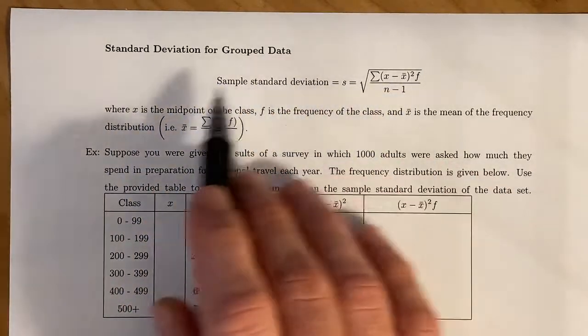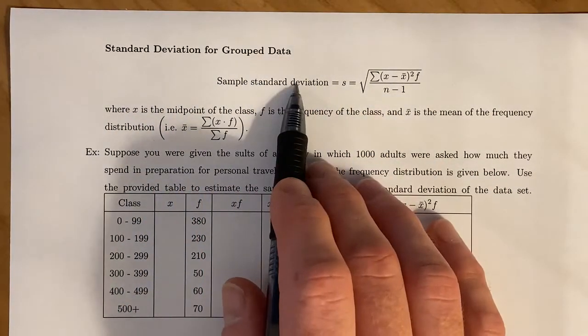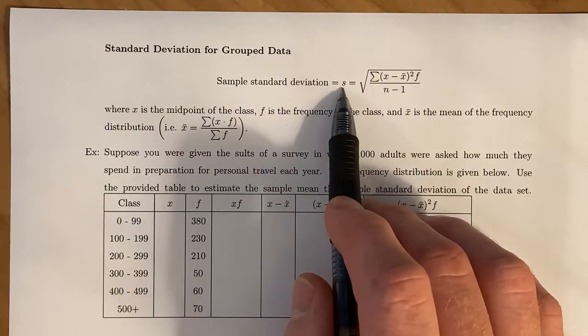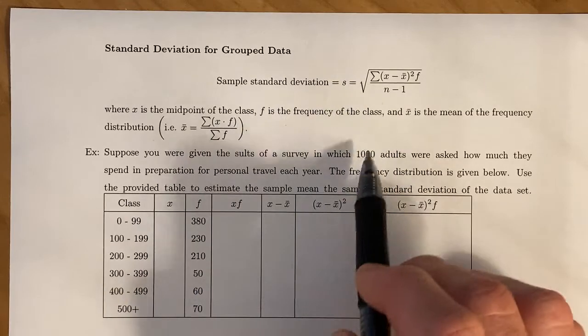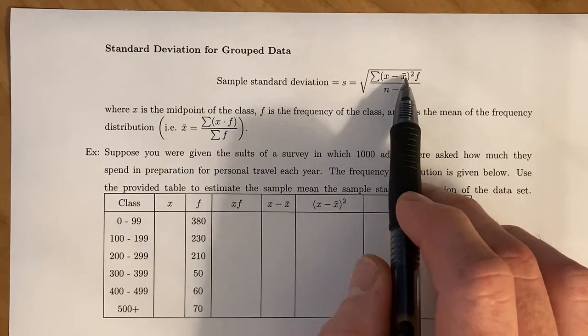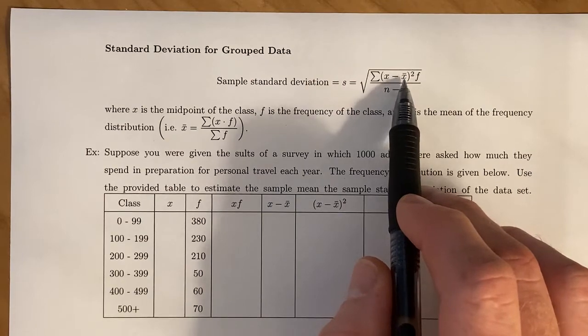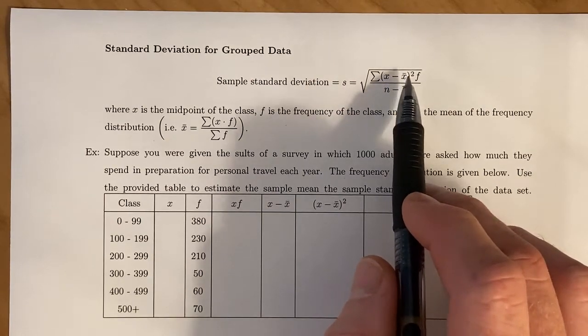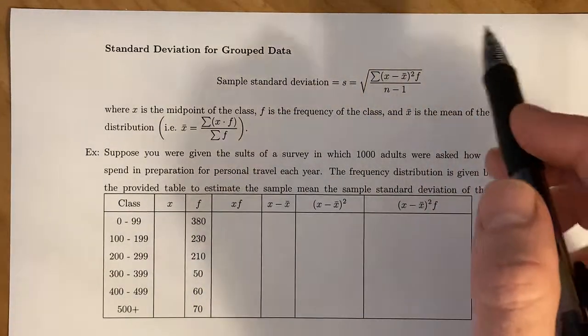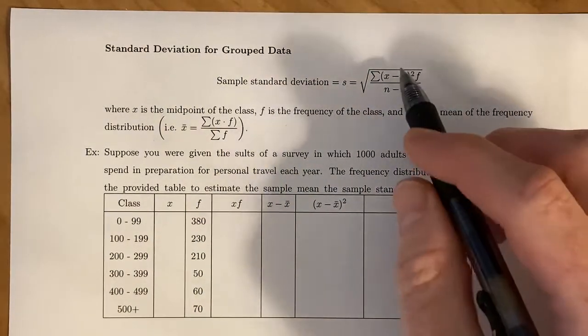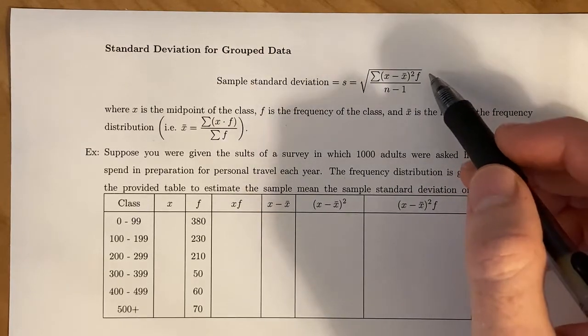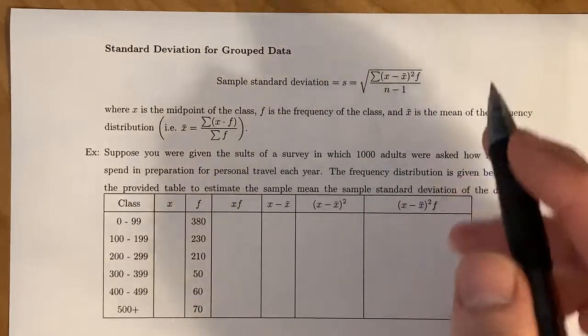This is going to be our formula. The sample standard deviation for grouped data, which is represented with S, is equal to the square root of the sum of X minus X-bar. X-bar is the mean of our grouped data, which we'll review in a sec. You square those deviations, then multiply by F, where F is the frequency of that class, and divide by N minus 1.